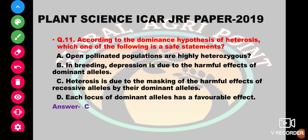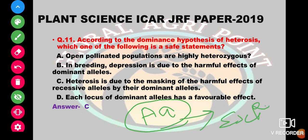According to the dominance hypothesis of heterosis, which is the correct statement? Heterosis according to the dominance hypothesis is a condition in which one dominant gene suppresses the expression of the recessive allele. Open pollinated populations are not highly heterozygous. Inbreeding depression is due to the harmful effect of dominant, not recessive, alleles. The correct statement C is: heterosis is due to the masking of harmful effects of recessive alleles by dominant alleles. So the answer is C.